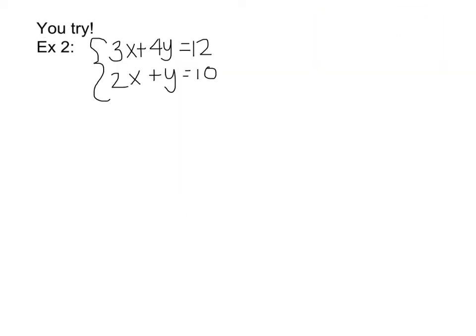Press pause and solve this system of equations by substitution. When solving by substitution, look in each equation for the variable that has a coefficient of 1. I found my coefficient of 1, so I'll solve for that variable. To move positive 2x to the other side, subtract it. Then take what y equals and substitute it in for y into the other equation.